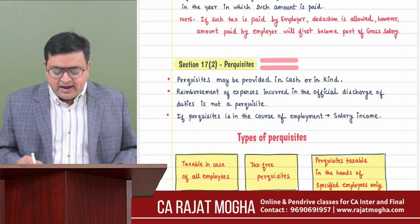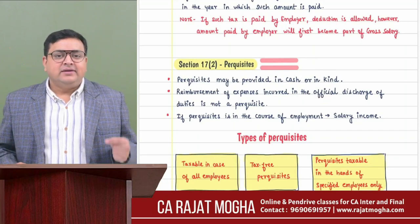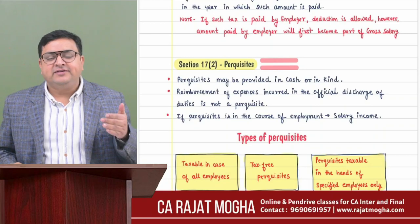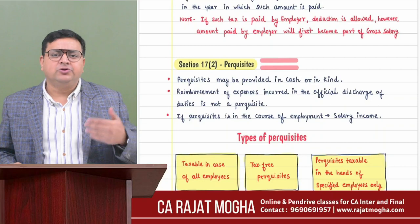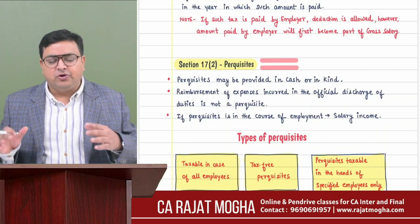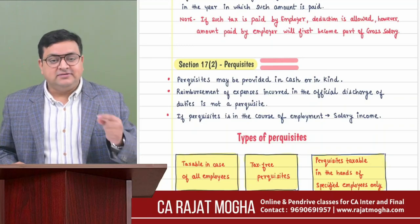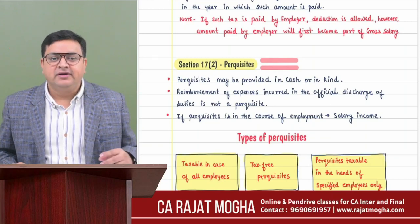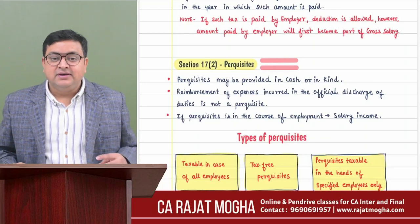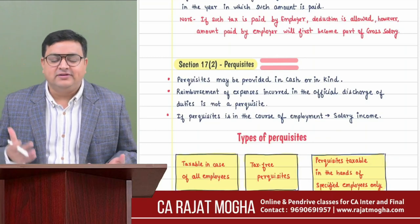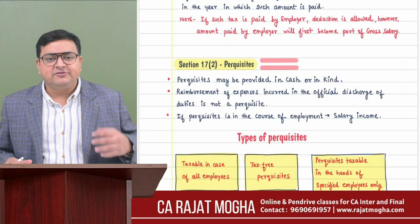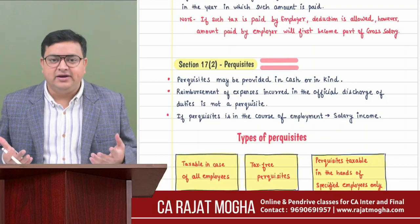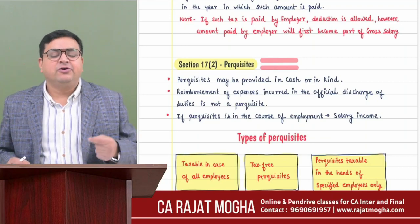Perquisites may be in cash or in kind. If an employee incurs expenses for official purposes - for example, traveling from Chennai to Madurai for official work - and gets reimbursement from the employer, that is not for the benefit of the employee but for the employer. Any reimbursement you get for official purpose is not your perquisite and will not become your income.